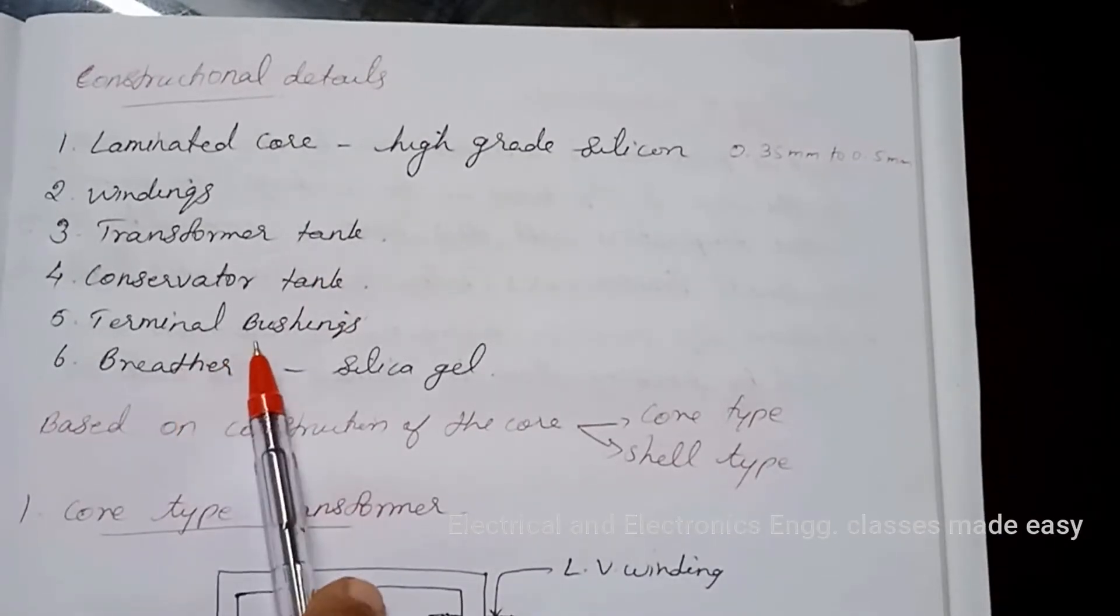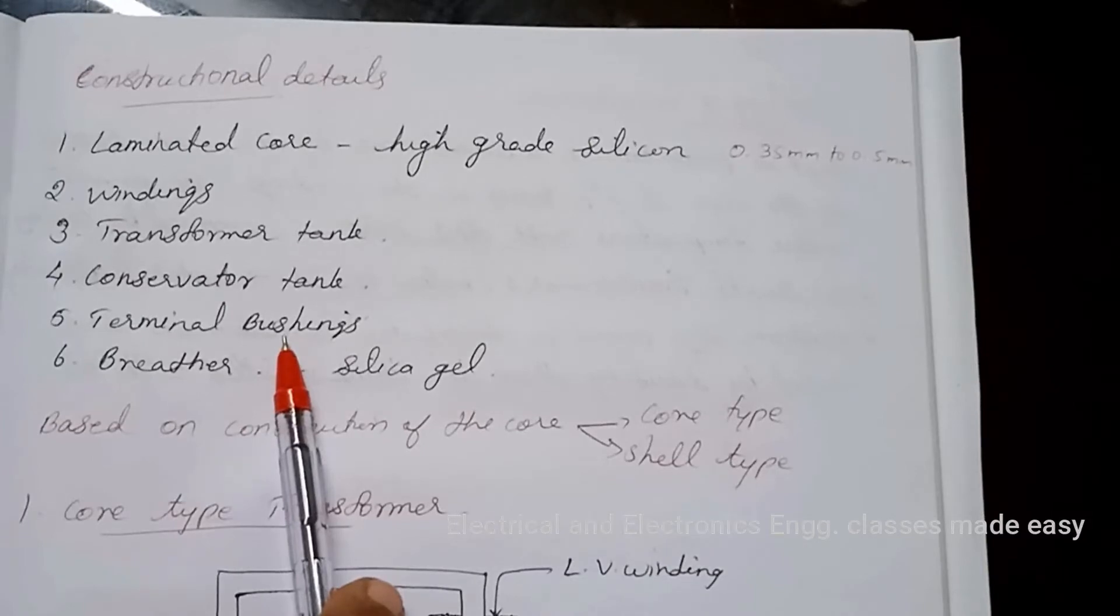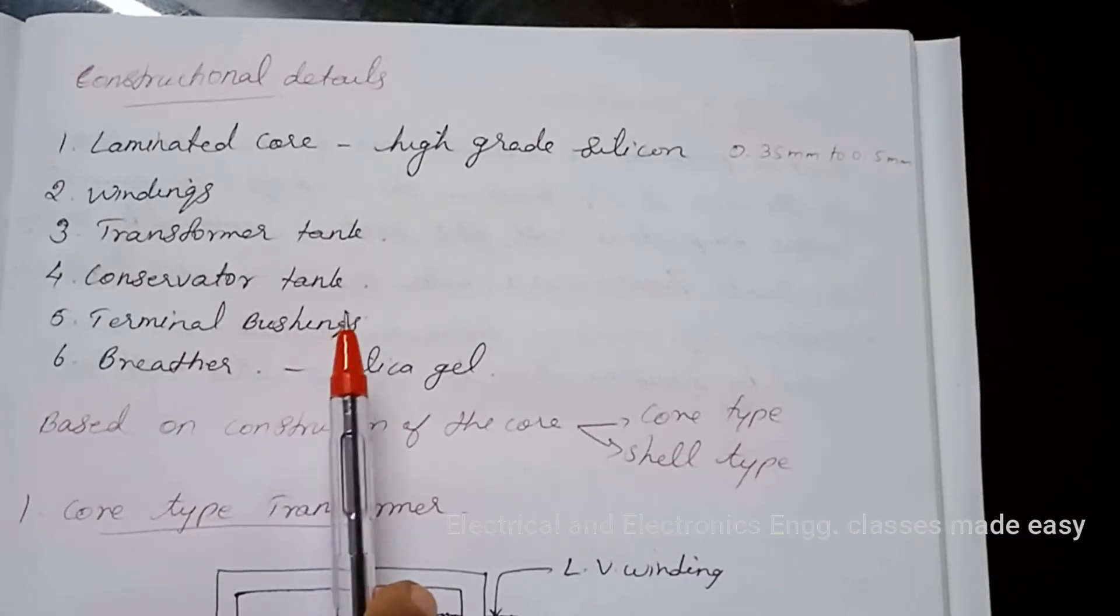Terminal bushings. The purpose of the bushings is to insulate and to bring out the terminals of the transformer from the container. Bushings are made of porcelain.